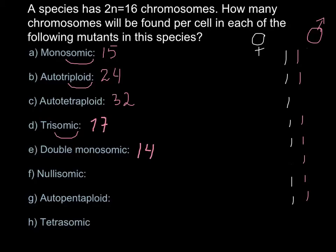Question F: Nullisomic. Let me first restore our diploid number of 16. Nullisomic is when we are missing one pair of chromosomes completely, and in this case we also have 16 minus 2 = 14 chromosomes. But in the previous example with double monosomic, we were missing one chromosome but still had the other chromosome from that pair. With nullisomic, we are missing one pair completely.